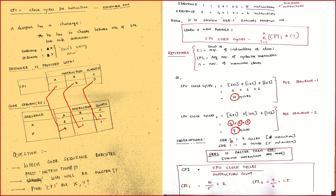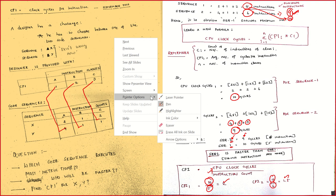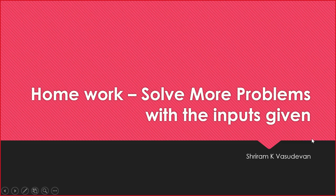Sequence Y needs 9 cycles and sequence X needs 10 cycles. So sequence Y is faster because it needs fewer clock cycles, even though it has 6 instructions compared to X's 5. It has more instructions but needs fewer cycles — so sequence Y is faster. Finally, CPI = CPU clock cycles / instruction count. For X: 10/5 = 2.0. For Y: 9/6 = 1.5. With this we complete the performance part of the problems.